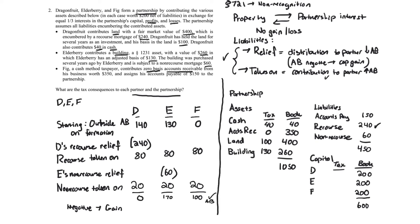Now we return to fill in the tax column of the capital accounts. When there are liabilities involved on formation, the tax capital account equals the outside basis before liabilities are taken into account. So D's tax capital is $140, E's is $130, and F's is $0.